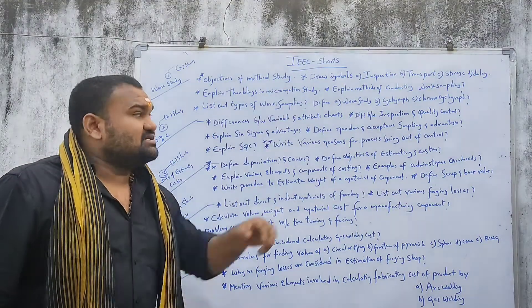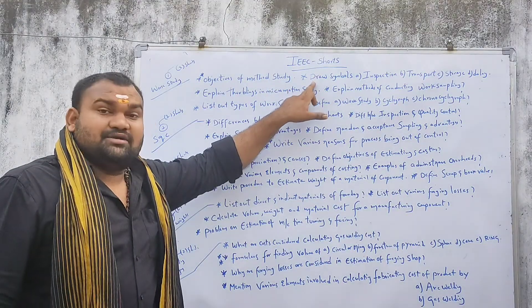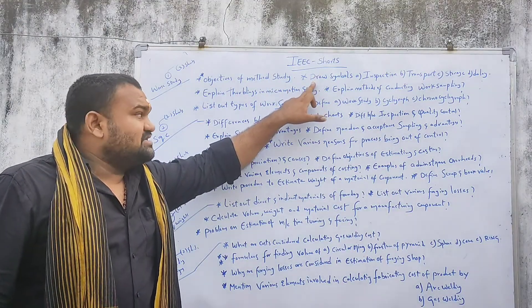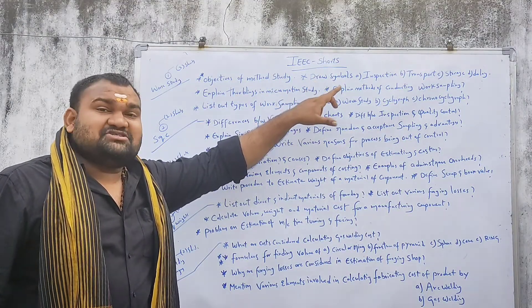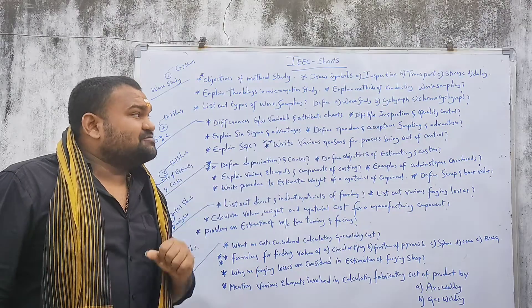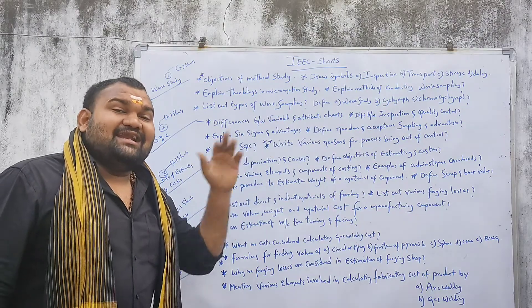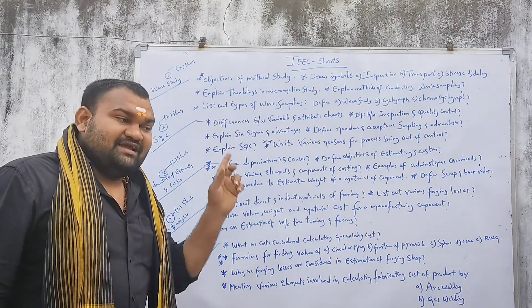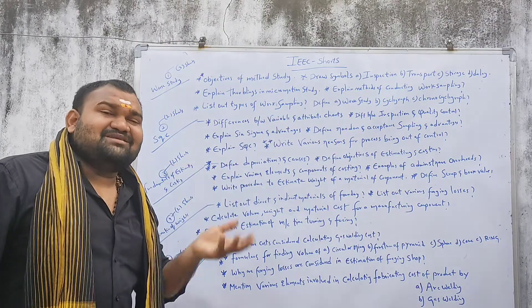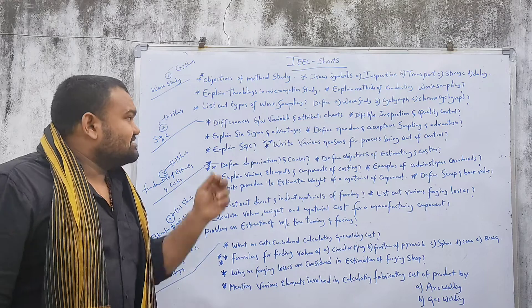Objectives of Method Study. Draw symbols — it is very important. Draw symbols: A. Inspection, B. Transport, C. Storage, and D. Delay. If it is the symbols, try not to manage it.